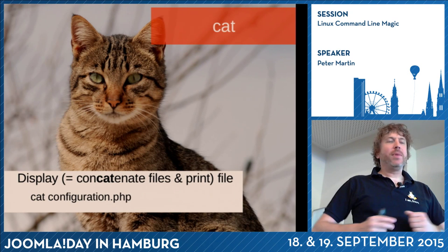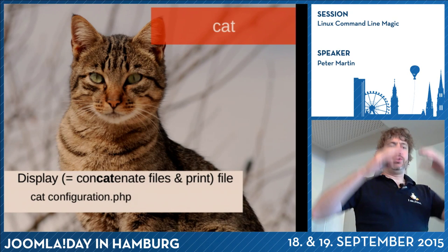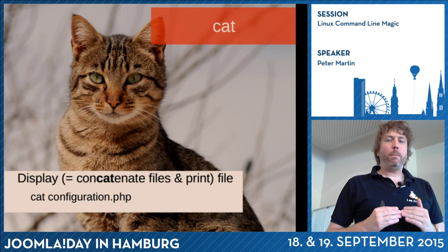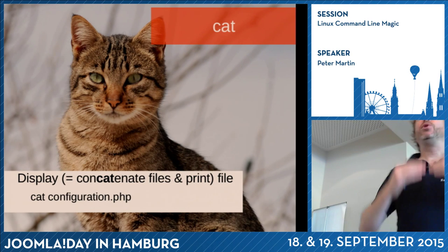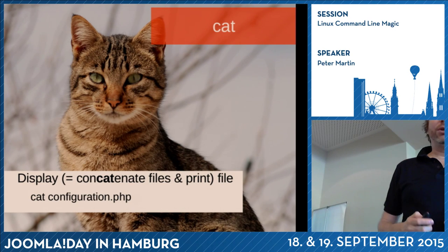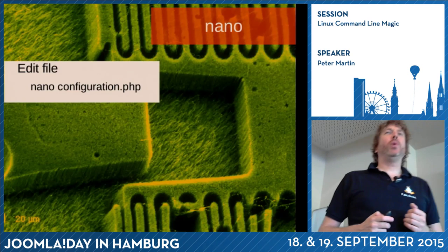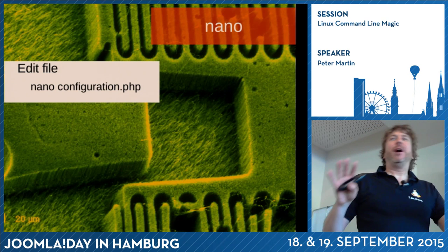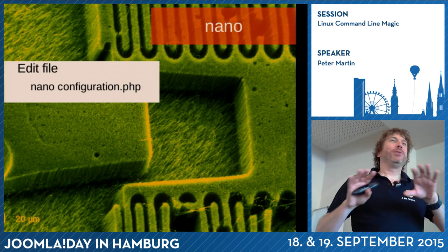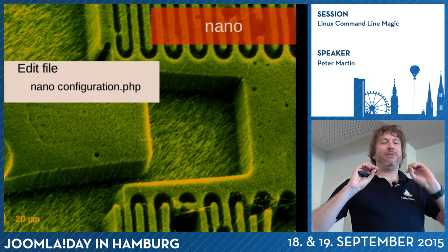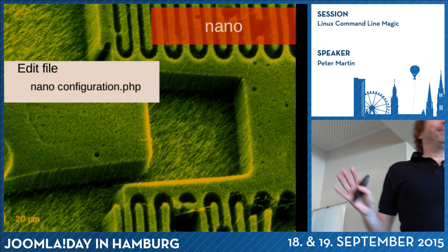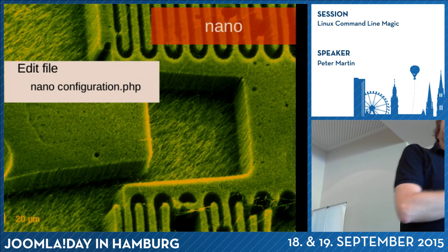Cat — concatenate — is used to view a file. If you want to edit a file, you can use something like nano. People who are really hardcore will laugh now because they use vi or vim. I don't mind — it's just a tool. I find vim too difficult.